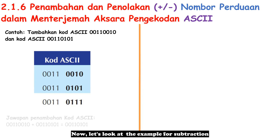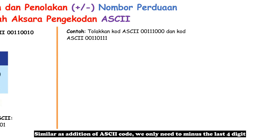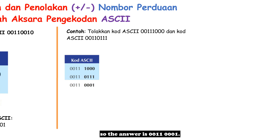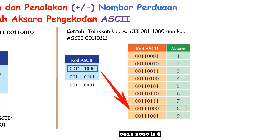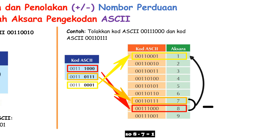Now let's look at the example for subtraction. Similar to addition of ASCII code, we only need to subtract the last 4 digits and keep the 4 digits in front. So the answer is 00110001. Checking with the ASCII table: 00111000 is 8, 00110111 is 7, and 00110001 is 1 — so 8 minus 7 equals 1.